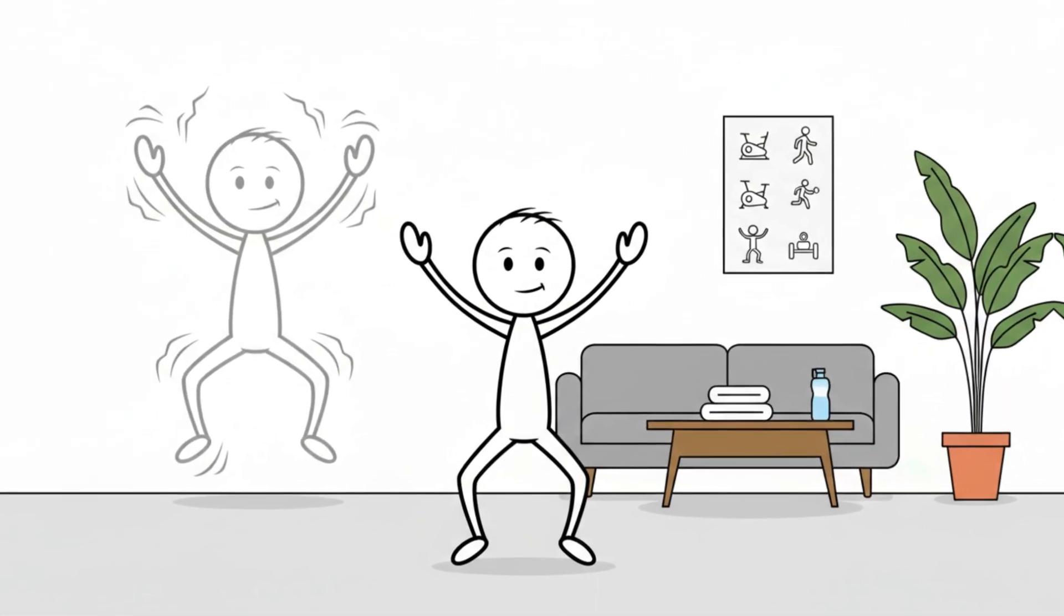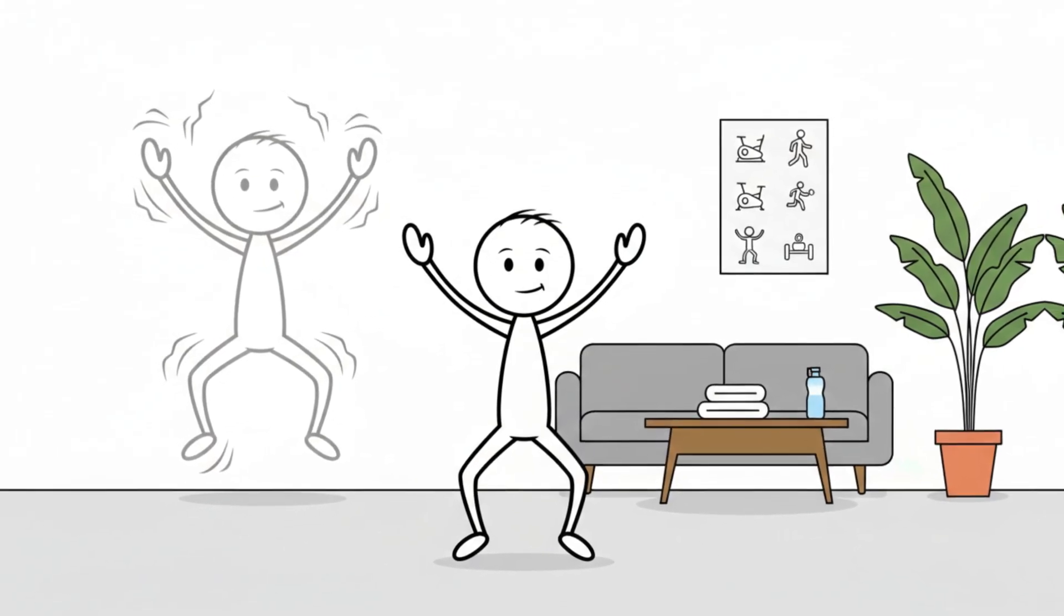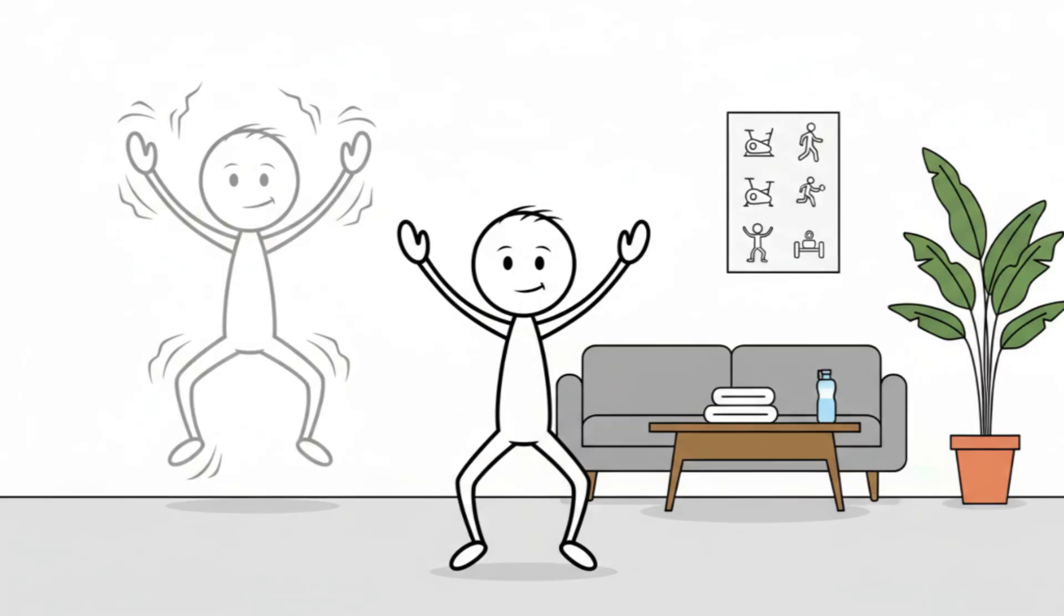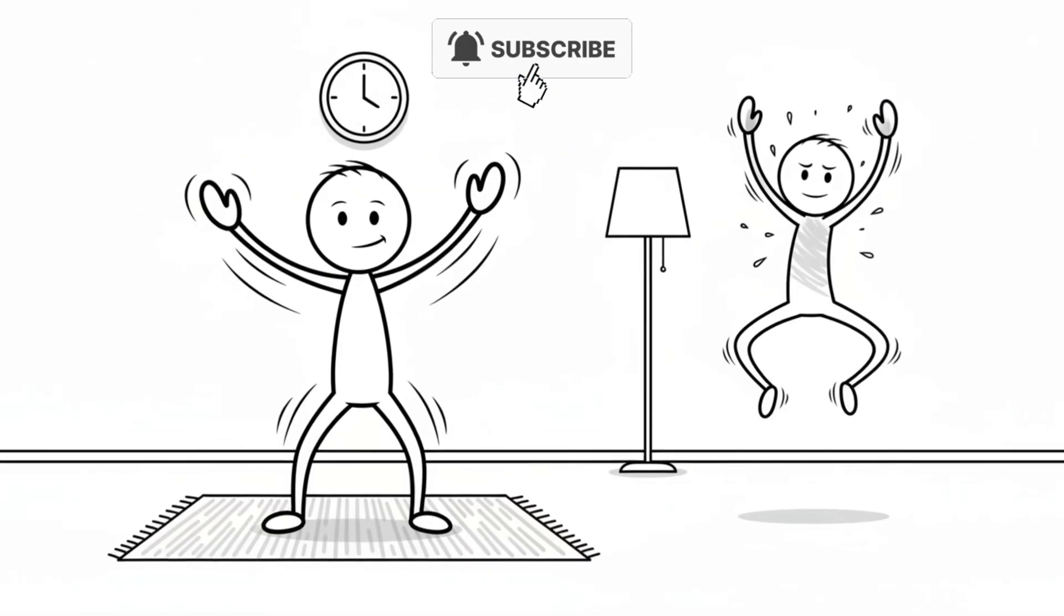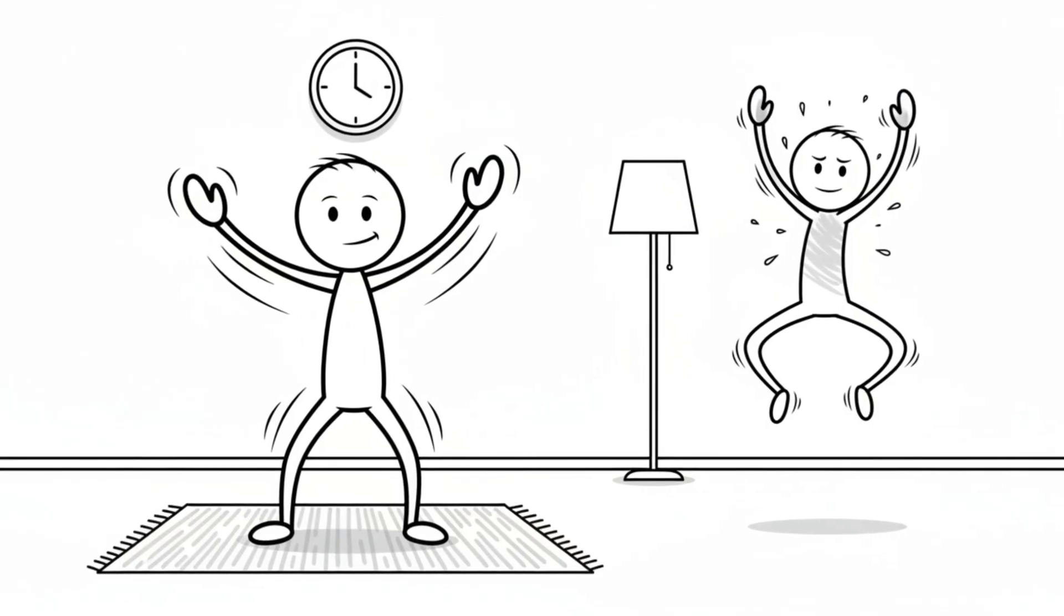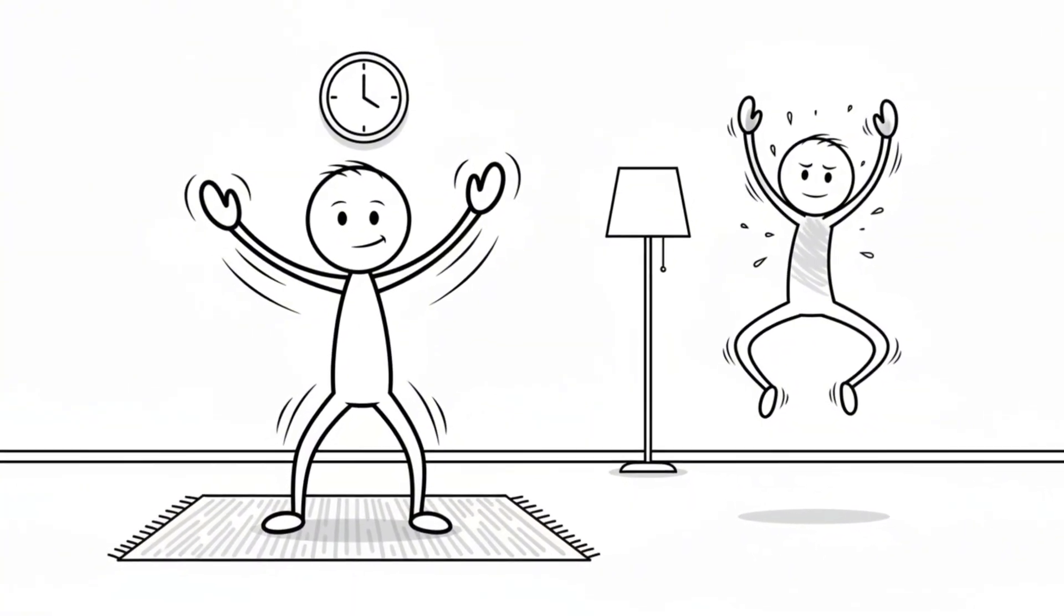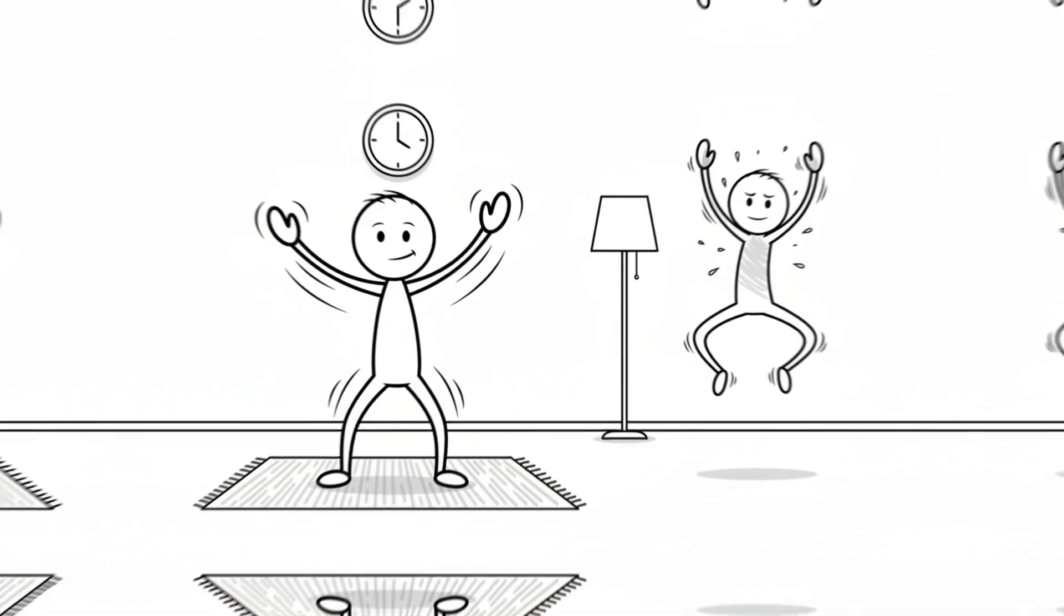Indoor sequence 2. Moderate jumping jacks for long duration. Jumping jacks don't look like a Zone 2 exercise at first glance, but when performed at a controlled, moderate pace, they fit perfectly into the aerobic fat-burning window. The key is to avoid explosive speed and instead maintain a smooth, repetitive motion.